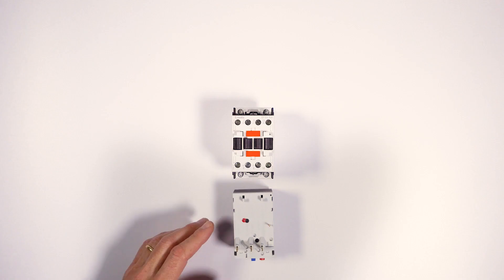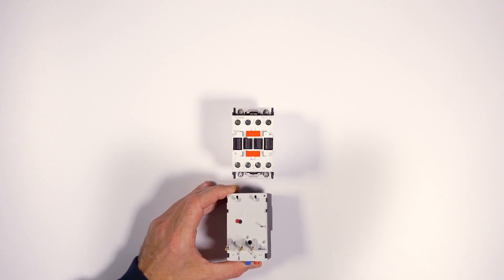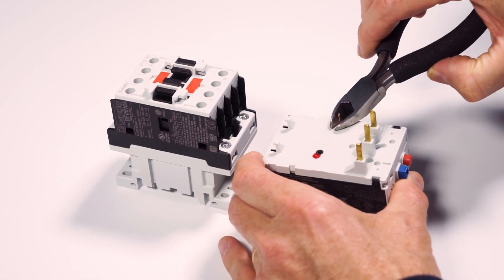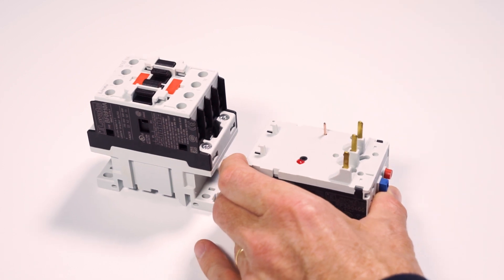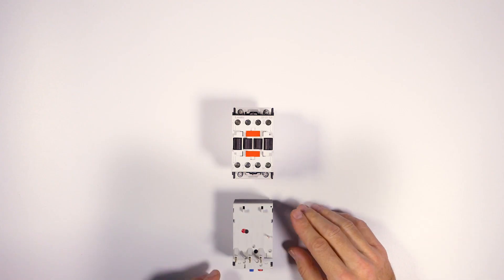If you do not need to connect the normally closed contact, you can remove the pin flush with the plastic using small cutters. Then remove it by unscrewing the screws and tilt it like this to latch it.